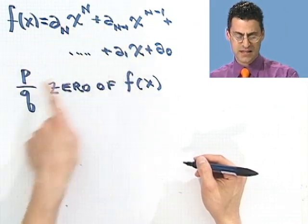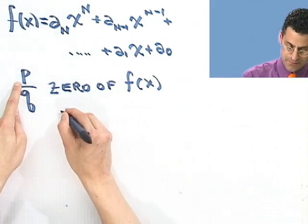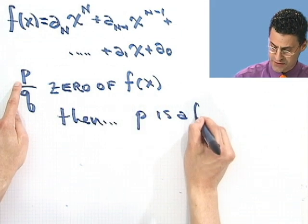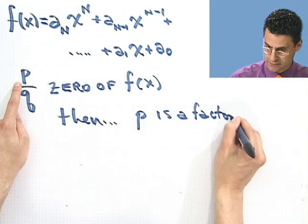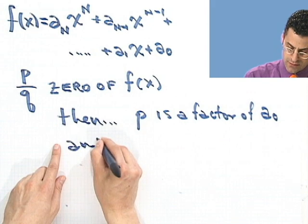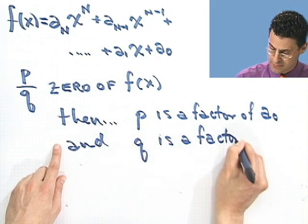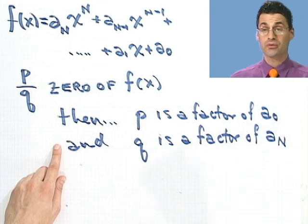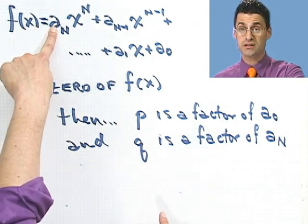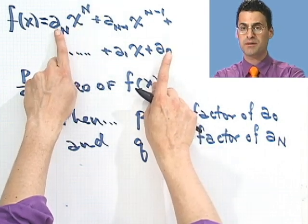So if you have this, and if this is a zero, then it will be the case that p is a factor of a₀, so that's this term, and q is a factor of a_n. So what that says, sort of in English, is that you just look at the first coefficient, the first number, the number that's appearing in front of the highest power of x, and the last number, the number that's just appearing by itself.